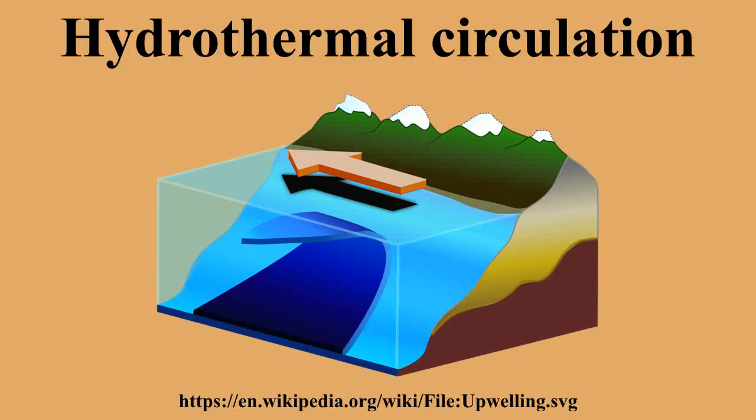Hydrothermal circulation, in its most general sense, is the circulation of hot water. Hydrothermal circulation occurs most often in the vicinity of sources of heat within the earth's crust. In general, this occurs near volcanic activity, but can occur in the deep crust related to the intrusion of granite, or as the result of orogeny and metamorphism.